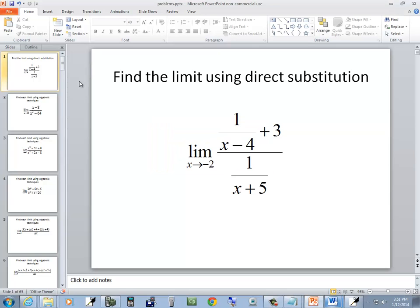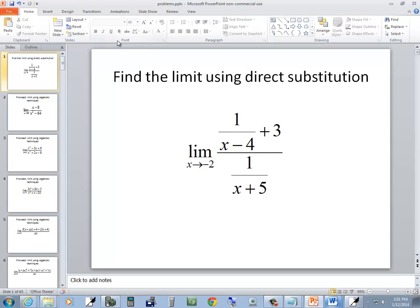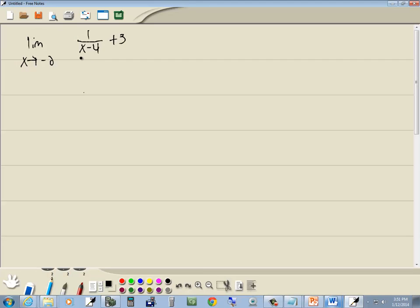Let's take a look at this problem. We have the limit as x goes to negative 2 of 1 over x minus 4 plus 3 over 1 over x plus 5.